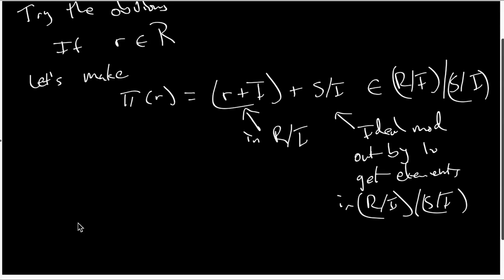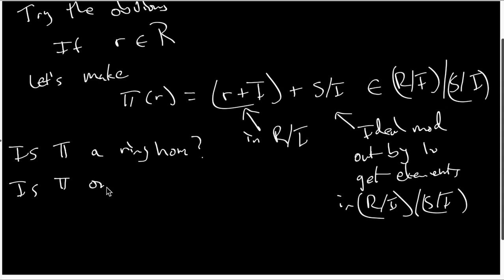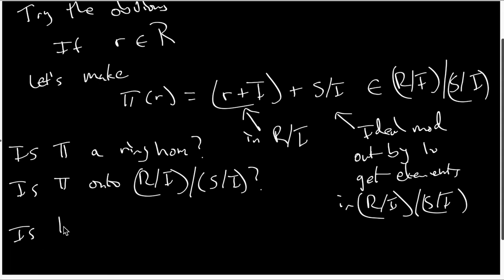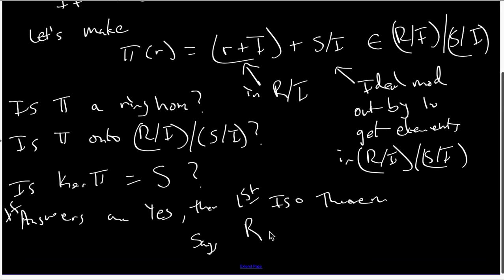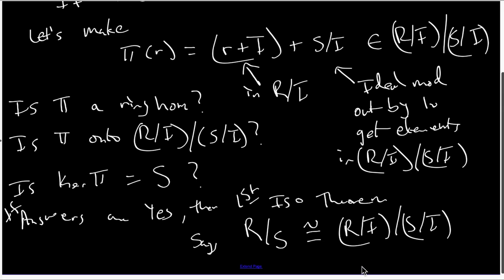We'll leave this video with the following questions: Is pi a ring homomorphism, and if it is, is pi onto the target ring? And finally, is the kernel of pi equal to the set S? Because if the answers to all of these are yes, then the first isomorphism theorem will let us conclude that R mod the kernel of pi — which would be S — is isomorphic to the target ring, and we will be done. We'll investigate the proof in the next video.